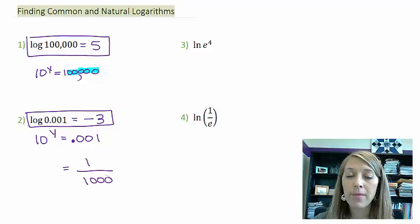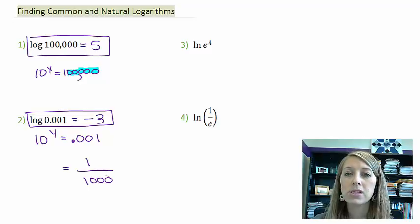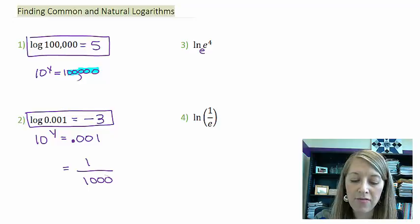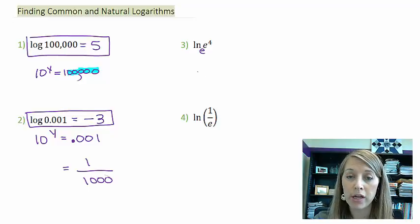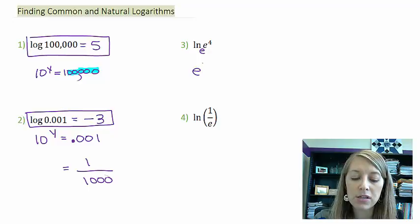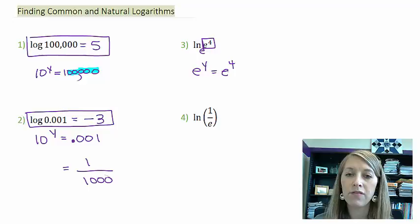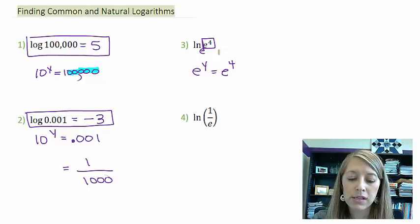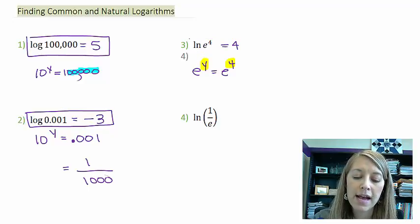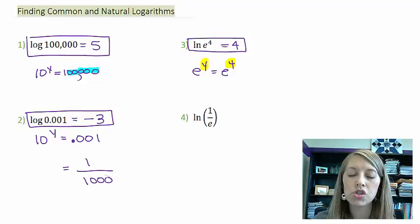Problems three and four might seem a little trickier because we have base e rather than base 10, but it's treated the exact same way. In number three, if I have base e, the exponential equation I'm asking is: e to what power is equal to my argument? My argument is e to the fourth. This is really easy. I can see that everything is set up nice and neat. This tells us directly that y is going to be equal to four. So the natural log of e to the fourth is just four.